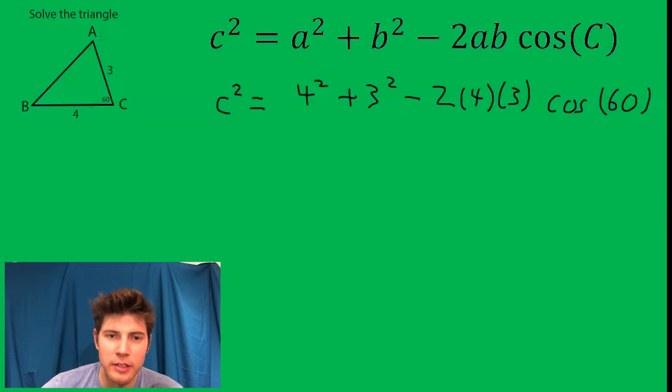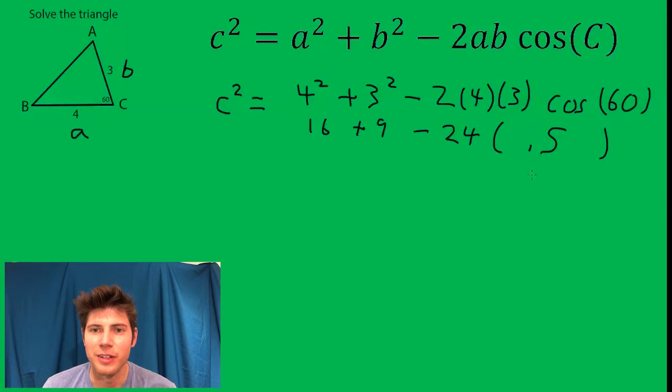My little a is the one opposite the capital A angle, and my little b is the one opposite the capital B. Now this is 16, this is 9, this ends up giving us 12, so it's minus 24. Cosine 60 is 0.5. So we add these together. It's 25 minus 12. We end up with 13.